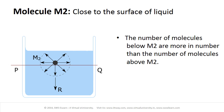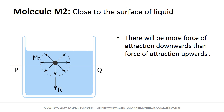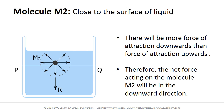The number of molecules below M2 are more in number than the number of molecules above M2. Thus, the vector sum of attractive forces of neighboring molecules will not be zero. In fact, there will be more force of attraction downward than upward. Therefore, the net force acting on the molecule M2 will be in the downward direction.